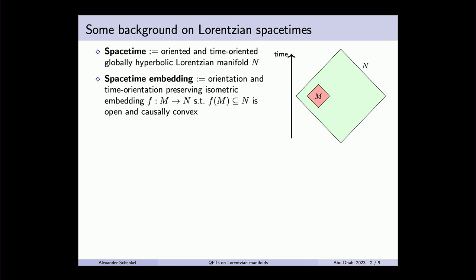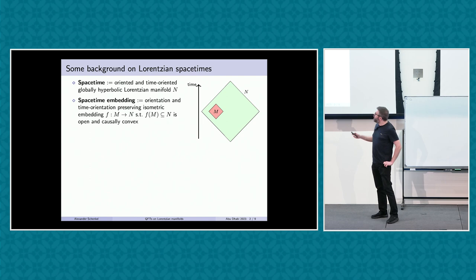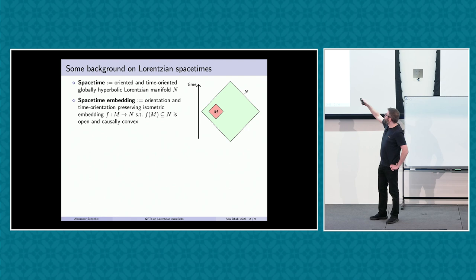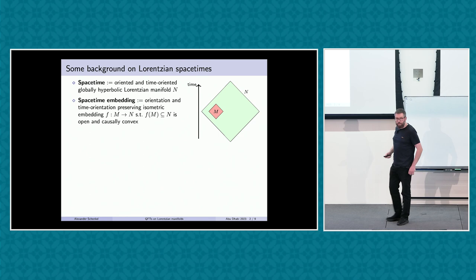A space-time embedding is an embedding of manifolds that preserves all structures — orientations, time orientations, and the metric. Its image must also be causally convex, meaning a causal curve that starts and ends in the image stays there for all times. So it shouldn't be like a banana where you can exit and re-enter with a causal curve.